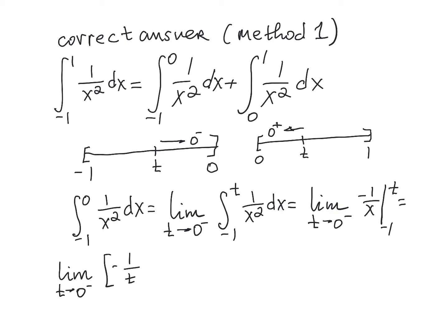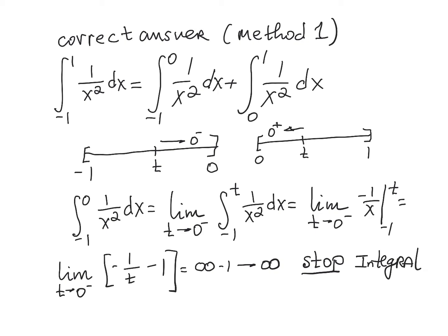This equals the limit as t approaches 0 from the left of negative 1 over t minus 1. Letting t go to 0 from the left means t is a small negative number; negative 1 over a small negative number heads to positive infinity, and subtracting 1 won't change that. So the first of the two integrals diverges, and we can stop there.